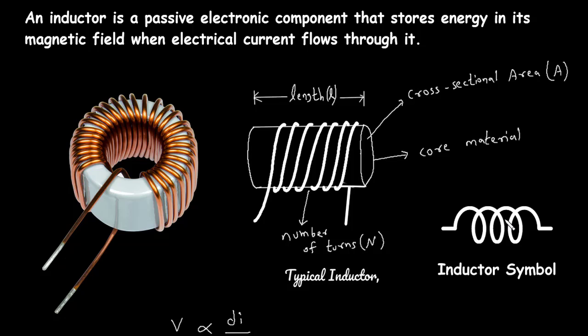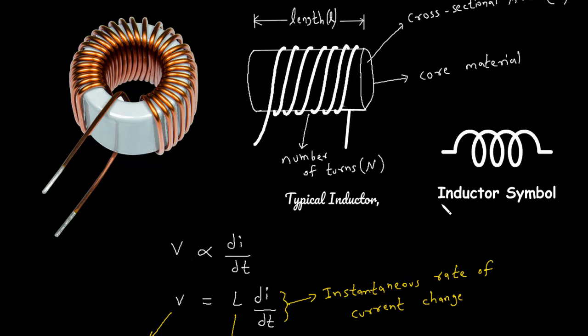Therefore a change in current produces a change in the electromagnetic field which induces a voltage across the coil according to Faraday's law of electromagnetic induction. That is, the voltage across the inductor is directly proportional to the time rate of change of current.